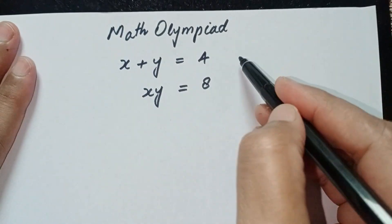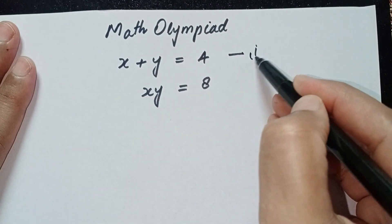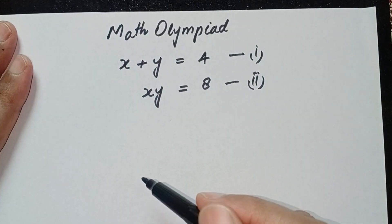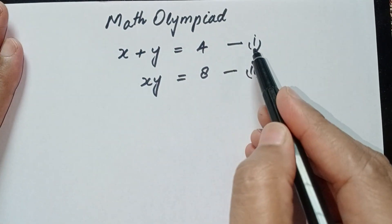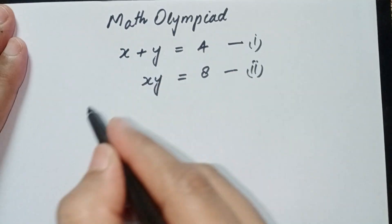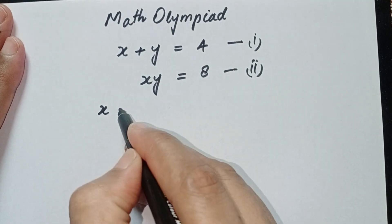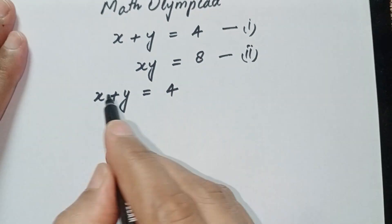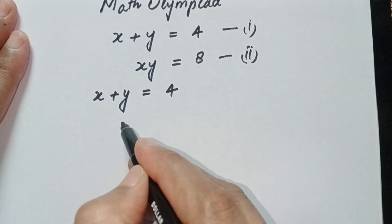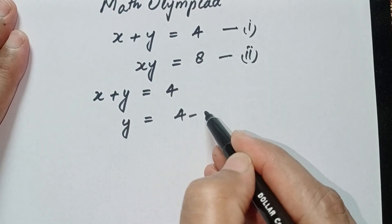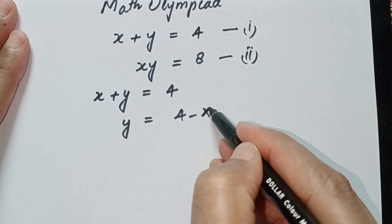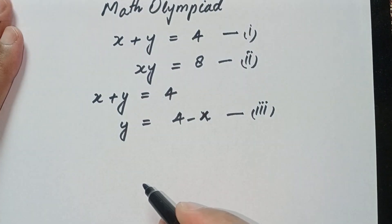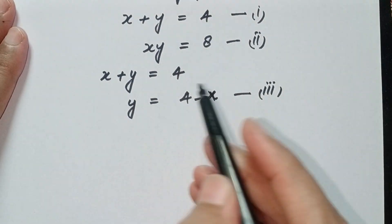First, give a name to this equation: equation 1, and here it is equation 2. From equation 1, we can write this equation in terms of x. x plus y is equal to 4, so we bring x to the other side and write y is equal to 4 minus x. This is equation 3.